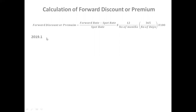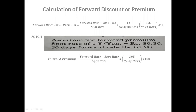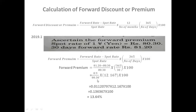We will take a problem from the 2019 question paper. Given: spot rate 1 USD = ₹80.30, and the 30-day forward rate is ₹81.20. Calculate the forward premium. The formula is: Forward premium = (Forward rate − Spot rate) / Spot rate × (365 / number of days) × 100. Since the problem gives 30 days: (81.20 − 80.30) / 80.30 × (365 / 30) × 100 = 13.64%. So the forward premium is 13.64%.